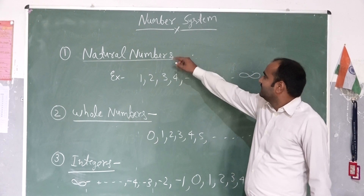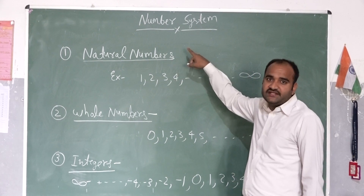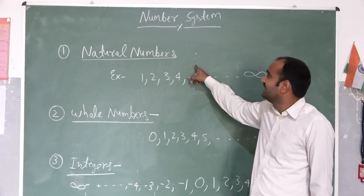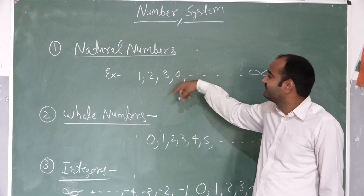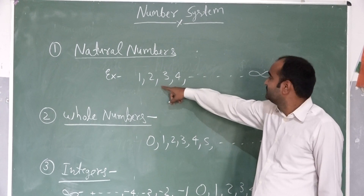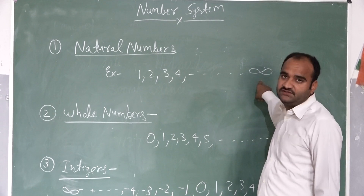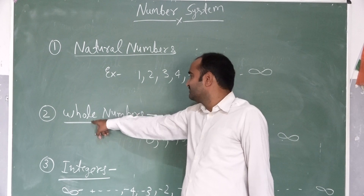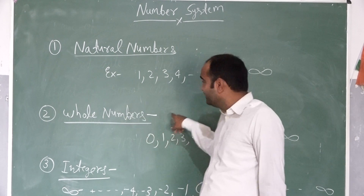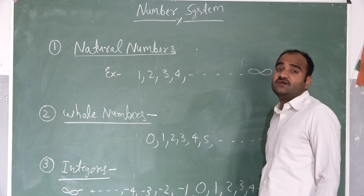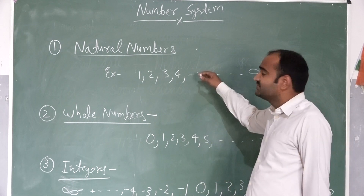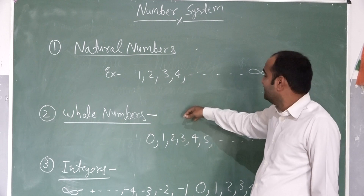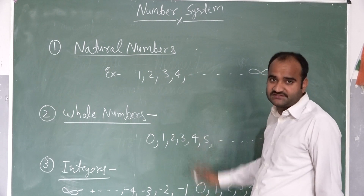Now, natural numbers are all counting numbers, starting from 1 up to infinity. After this, second is whole numbers. Whole numbers — where natural numbers started with zero, it forms whole numbers.